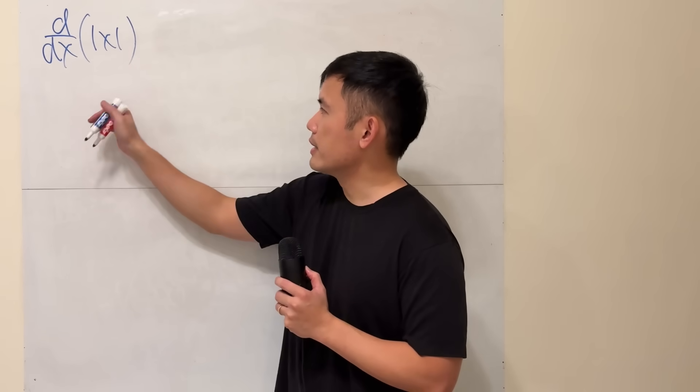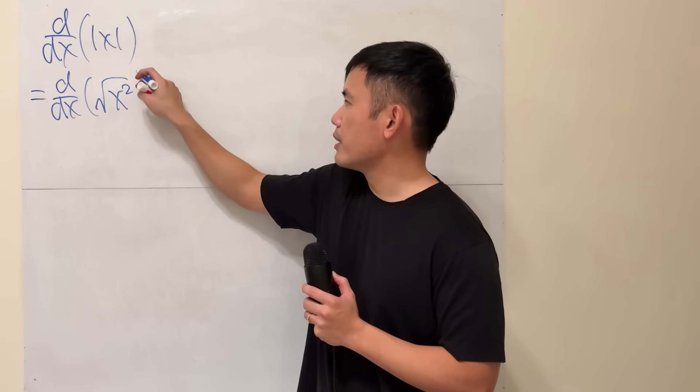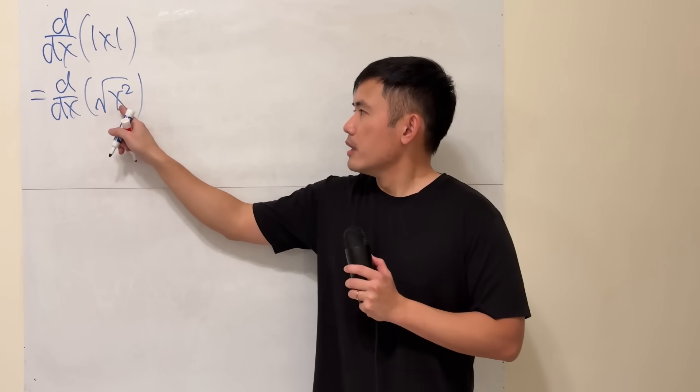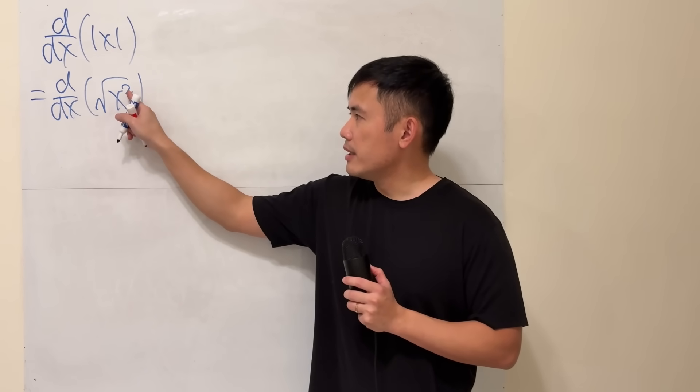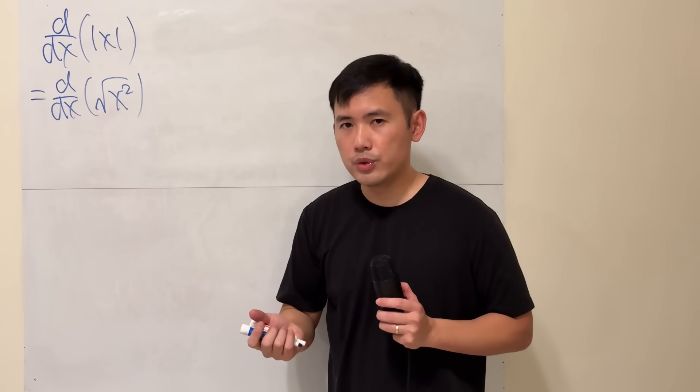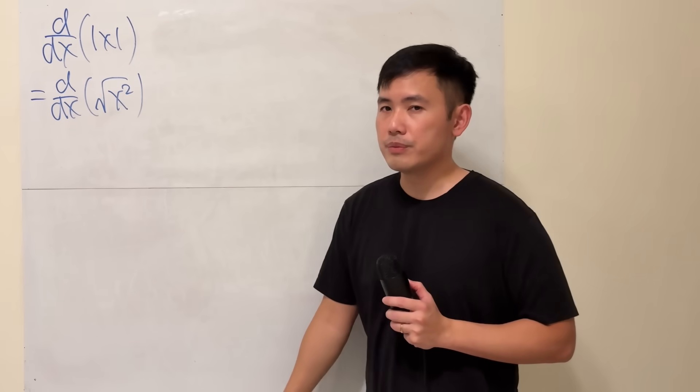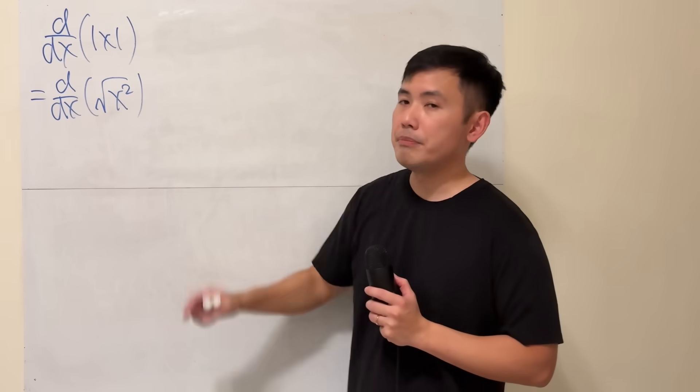Well, the key is, when we have absolute value of x, we are going to purposely rewrite it as square root of x squared. Remember, when we have square root and then the square, they cancel, but you have to make sure the output of the square root is always non-negative, so you will have to end up with attaching the absolute value. Now, we are just kind of doing this backwards.